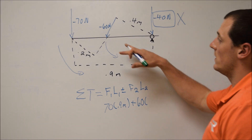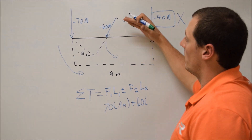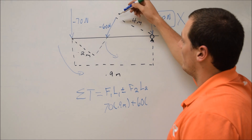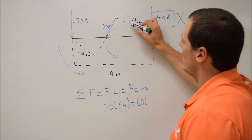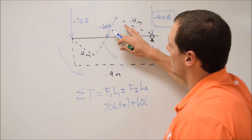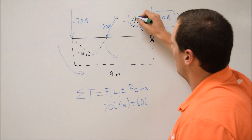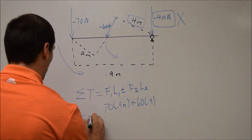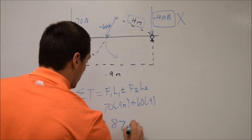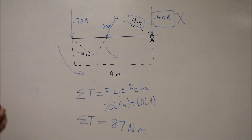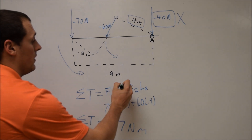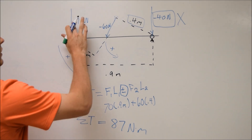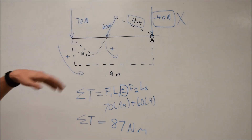Since the 60 N force is not operating perpendicular to the axis of rotation, we treat it as a lever arm and assess the length of that specific lever arm, which is the connection between the force and the axis of rotation — 0.4 meters. So we add 60 times 0.4. When we do the math, the sum of the torques equals 87 newton-meters. Remember to disregard the given sign and reassign it based on which way the force actually tends to cause rotation — both forces here are positive.